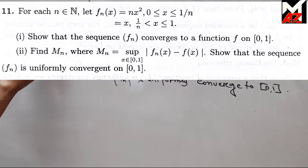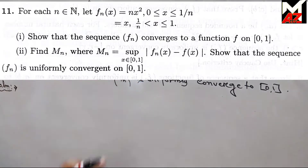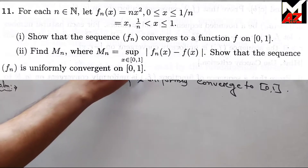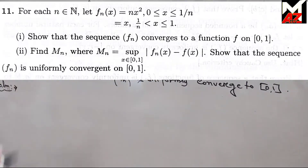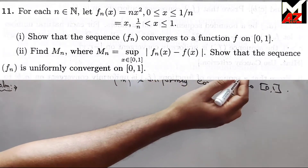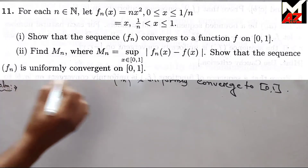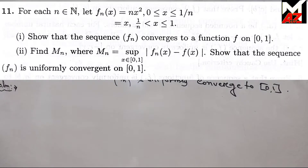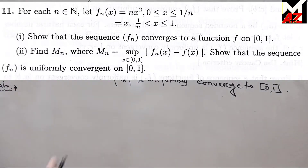The problem is: for each n belonging to the natural numbers N, let f_n(x) = nx² for 0 ≤ x ≤ 1/n, and f_n(x) = x for 1/n < x ≤ 1. The function is defined on the interval [0, 1]. We have to show the sequence of functions f_n(x) converges to a function f on [0, 1], find M_n, and from the M_n test show that f_n is uniformly convergent.